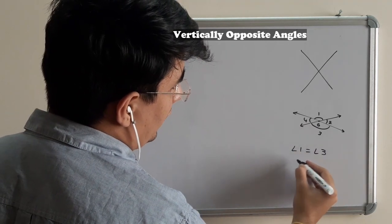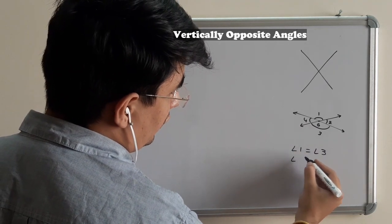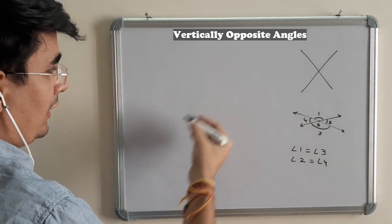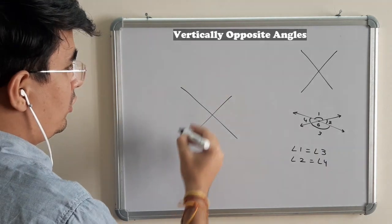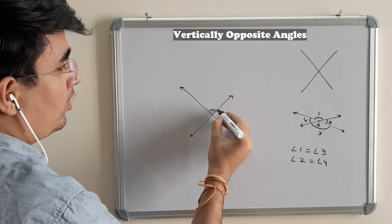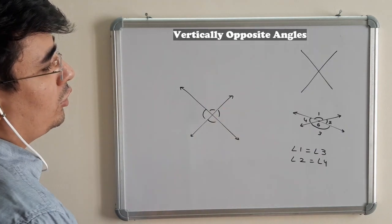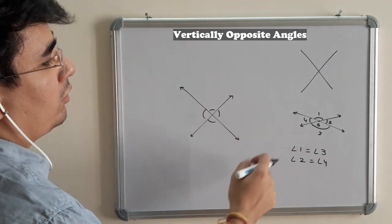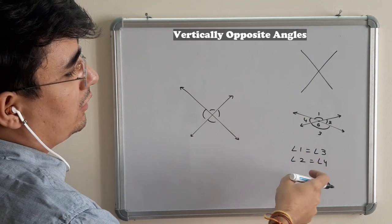I don't want you to take my words. I just want you to draw this figure randomly. Random two lines you draw, and with the help of a protractor, measure all four angles and see yourself whether the two angles are equal or not. Angle 1 equals 3, and angle 2 equals 4.